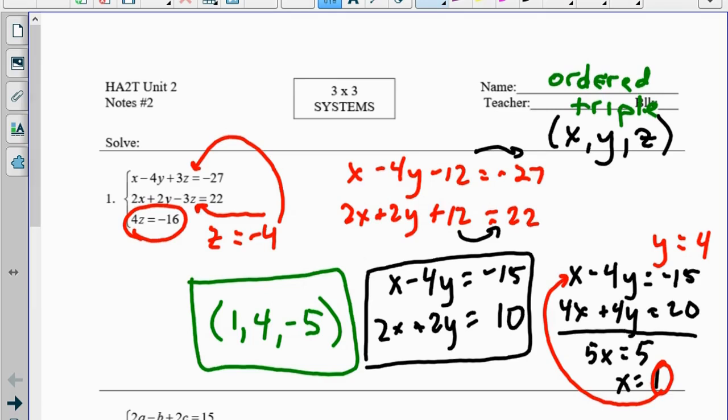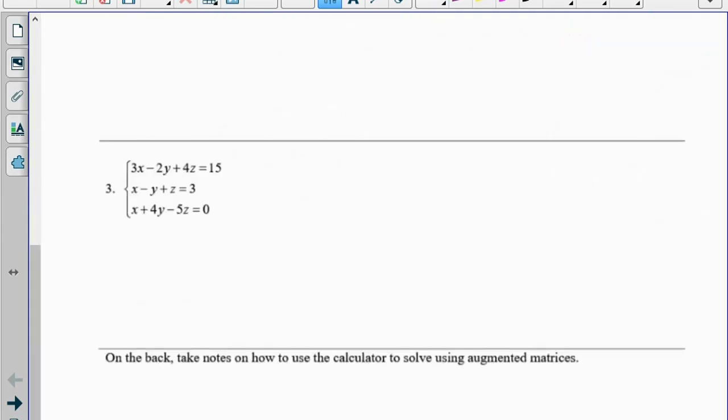This problem is actually really good for helping us understand what we want to do. We want to get one of the variables to be gone, and then we can turn it into a 2x2 system, which we should be pretty good at solving.